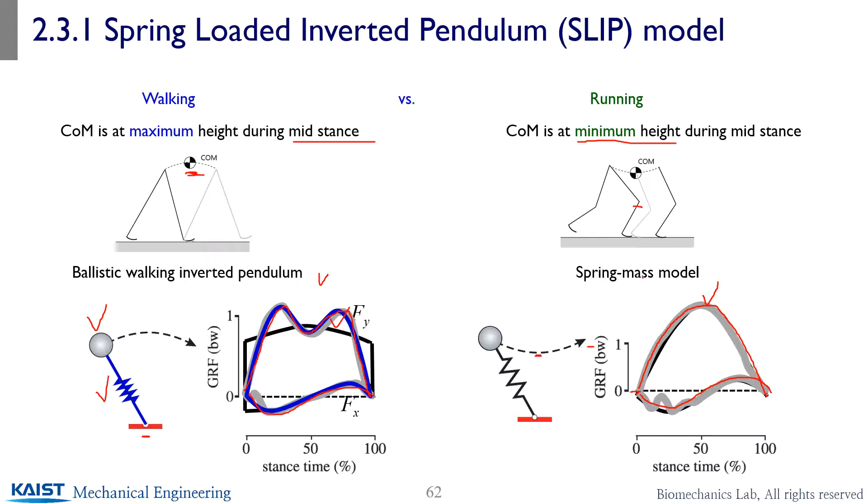And nowadays, SLIP is serving as one of the popular theoretical concept framework to understand the mechanics for locomotion. And it makes sense. Like, you know, walking and running, as you walk faster and faster, you actually make a transition from walking to running. So could possibly be under the same mechanical family, right? So that's what I'm going to talk about in chapter 2.3.